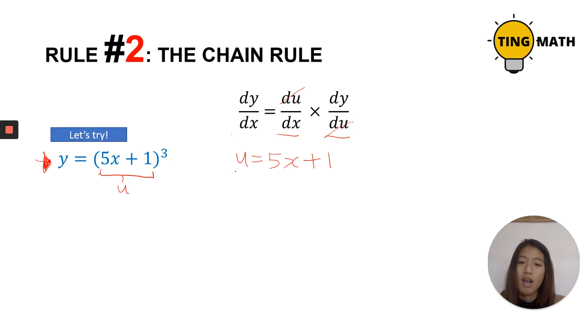When we try to differentiate this with respect to x, what we get is, well, 5x to the power of 1. So 1 multiplied by 5 is 5. x will become to the power of 0, which is 1. And 1 is a constant, so when we differentiate it, it will be 0. Now we are done with du dx.